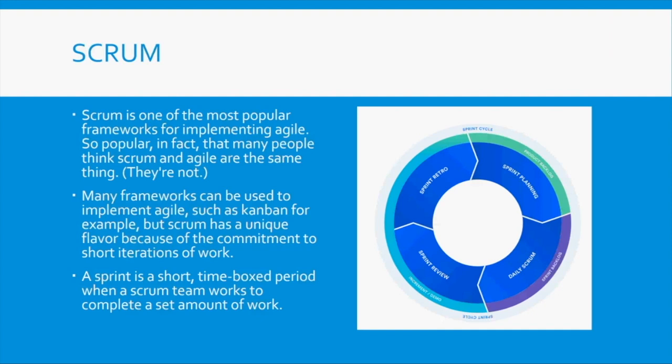When working in Agile using Scrum, you have a time allocated for each sprint — it could be two, three, four, or five weeks, but the most common is two weeks. Within that two-week sprint you commit to delivering something. What you commit to the sprint must be deliverable within those two weeks.